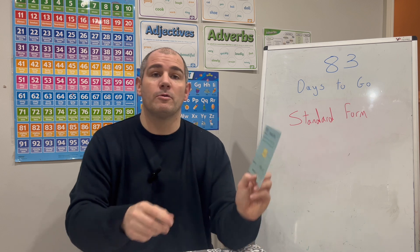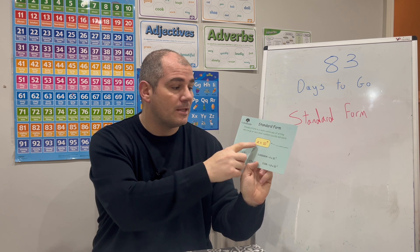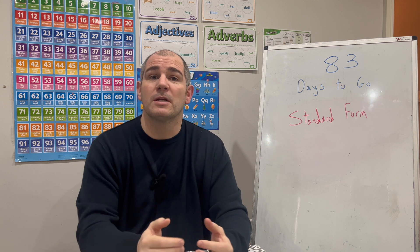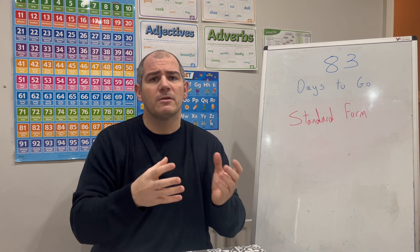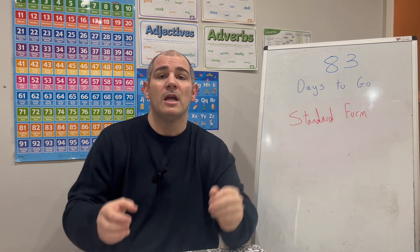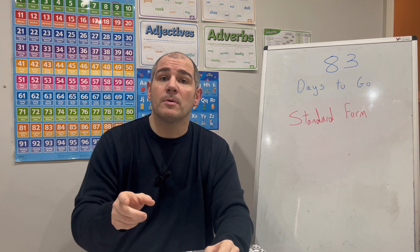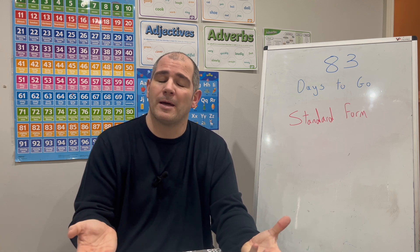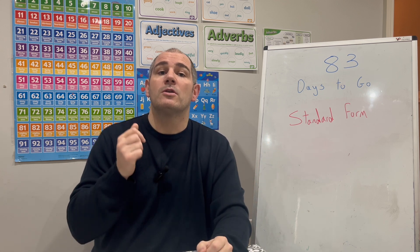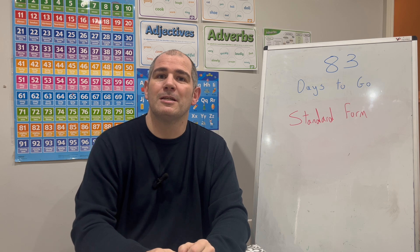To summarise: in Standard Form, numbers are written as A × 10^n where 1 ≤ A < 10 and n is an integer. We've covered writing numbers in Standard Form, converting back to ordinary numbers, and answering Standard Form questions including addition, subtraction, multiplication, division, and contextual problems such as distances of planets or speed-distance-time. There's a link in the description to practice questions — this topic comes up across all three papers, so make sure you're confident with it. Good luck with your revision!